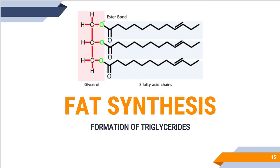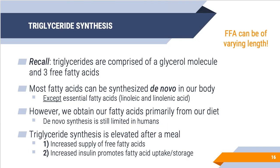Now, let's talk about fat synthesis — how we actually form triglycerides. Triglycerides are a glycerol backbone with three free fatty acids attached to it. Most fatty acids can be synthesized within our body de novo, except the essential fatty acids, linoleic and linolenic acid. However, de novo synthesis is limited in humans in the sense that we can't make enough fatty acids quickly or in large enough quantities to supply our body's needs, so we obtain most of our fatty acids primarily from our diet. Triglyceride synthesis is elevated after a meal: those meals contain fatty acids which elevate circulating free fatty acids, and we also have increased insulin — our typical anabolic response — which can promote fatty acid uptake and storage.